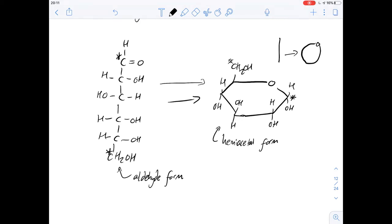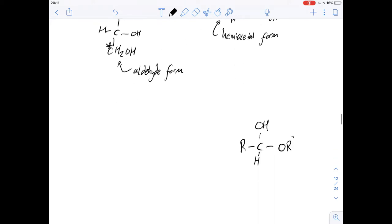Okay, so 57 says which one of the following structures represents the hemiacetal that exists at equilibrium in a solution of propanol and ethanol.